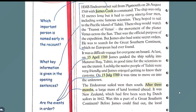So this is your page. Read this page carefully and then answer the questions written on the left side. The first question is: which important person is named early in the recount? This blue line is pointing toward this name, and this is James Cook. The next question is: what key information is given in the opening sentences? The information is about the transit of Venus. Are the events in order?